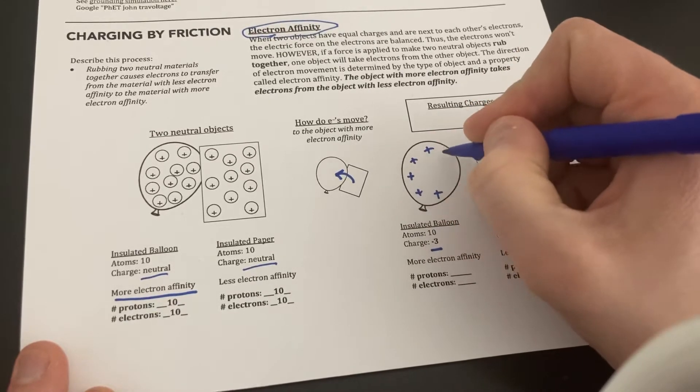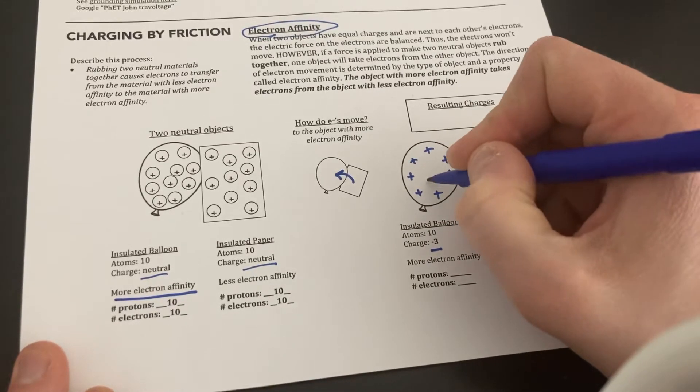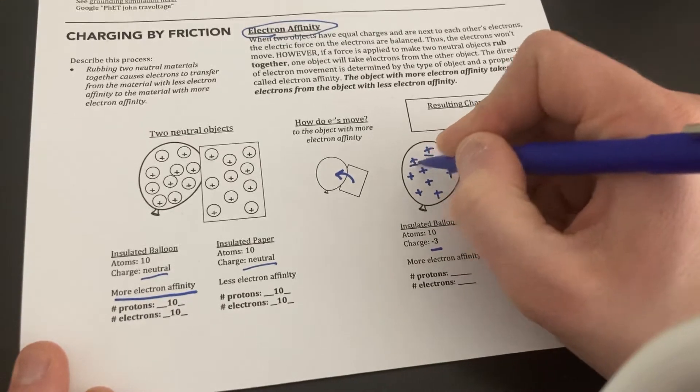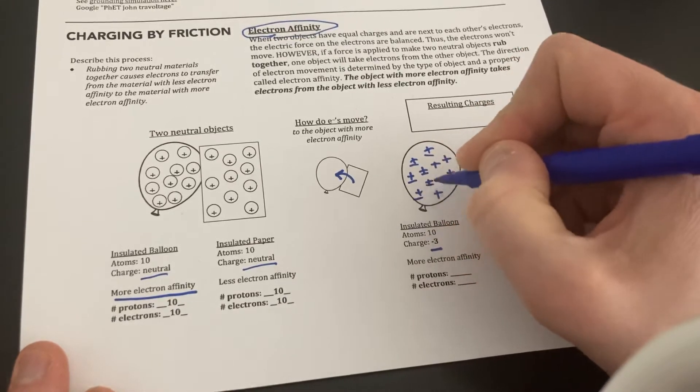One, two, three, four, five, six, seven, eight, nine, ten. And I'm going to make all these atoms neutral.